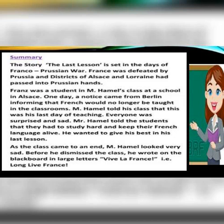Here we can have a quick recap of the summary of the lesson. The story 'The Last Lesson' is set in the days of the Franco-Prussian war. France was defeated by Prussia and the districts of Alsace and Lorraine had passed into Prussian hands. Now there was a student, Franz, who was studying in M. Hamel's class at a school in Alsace. One day, a notice came from Berlin informing that French would no longer be taught in the classrooms, and all classes would be taught in German.